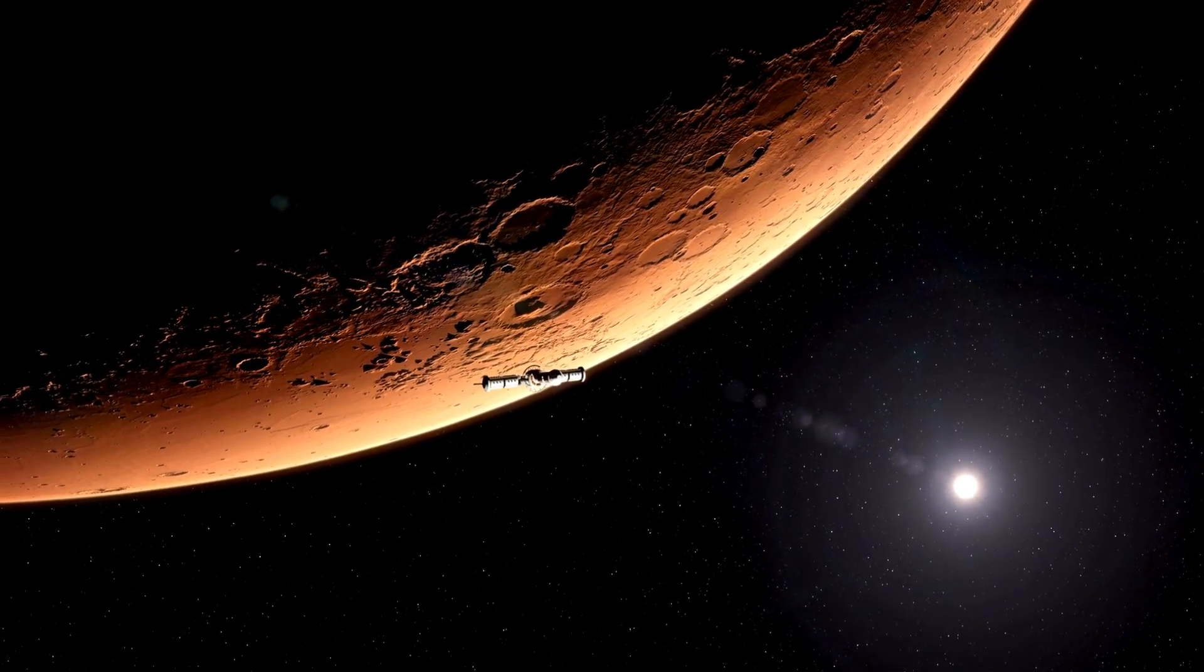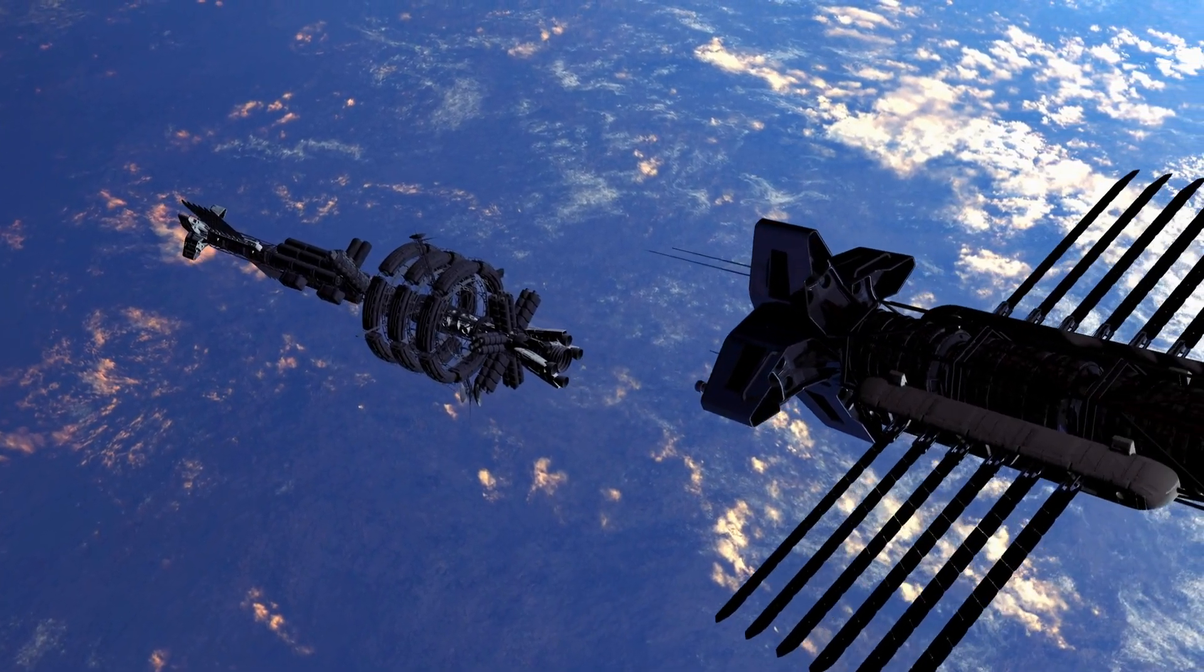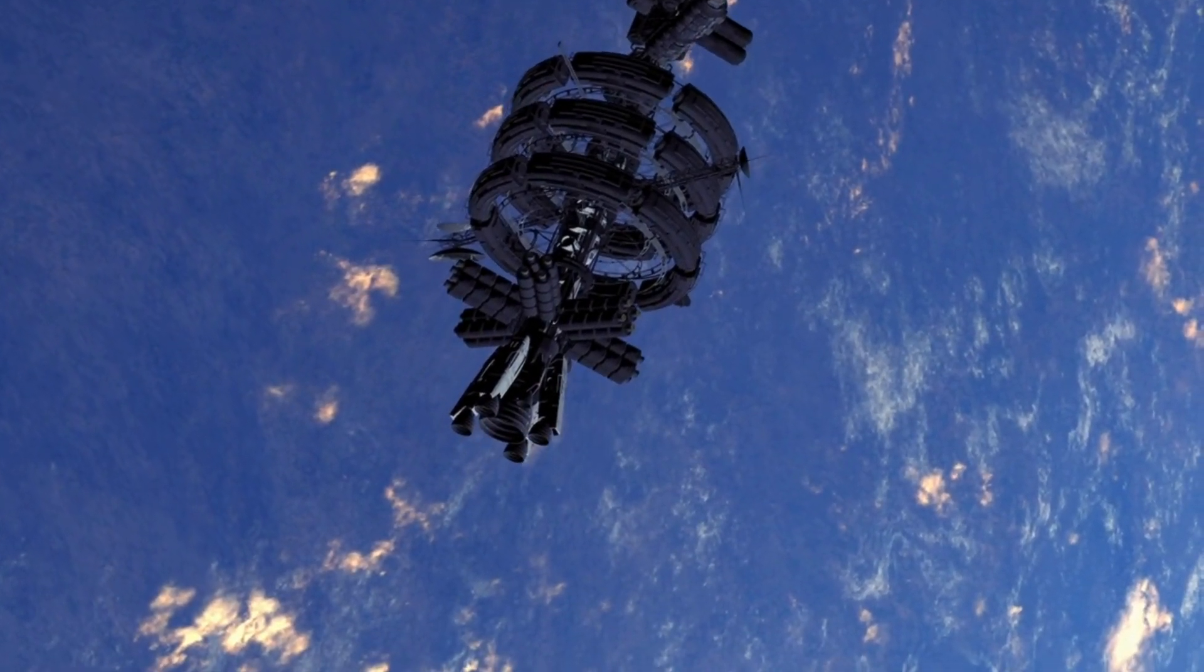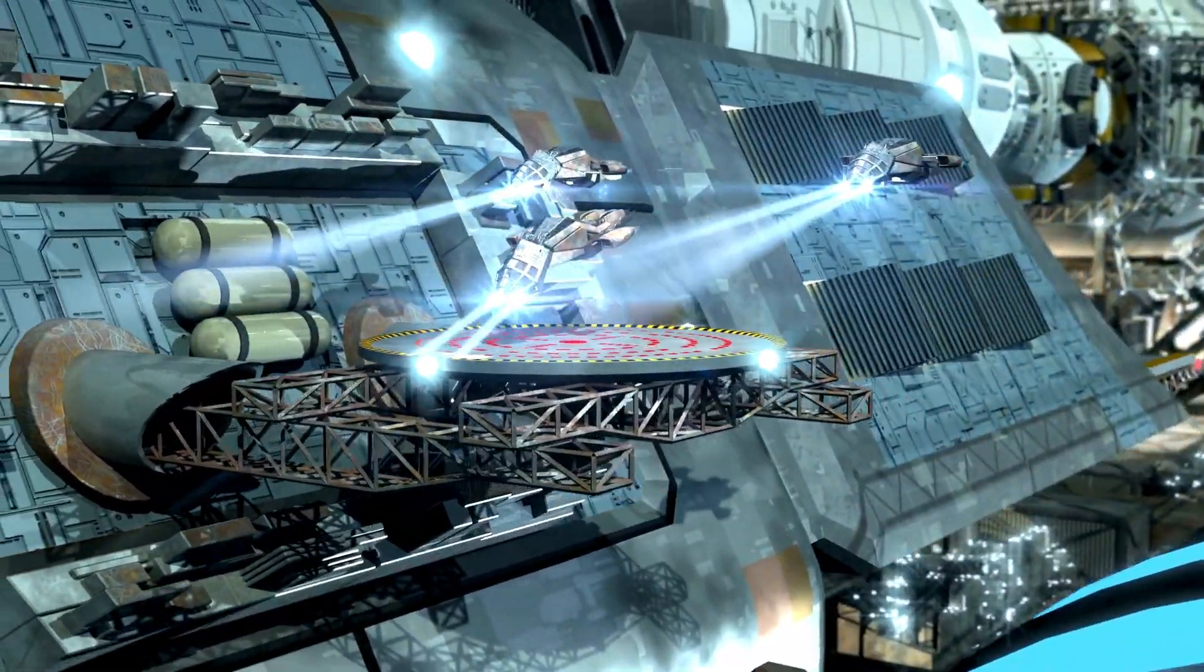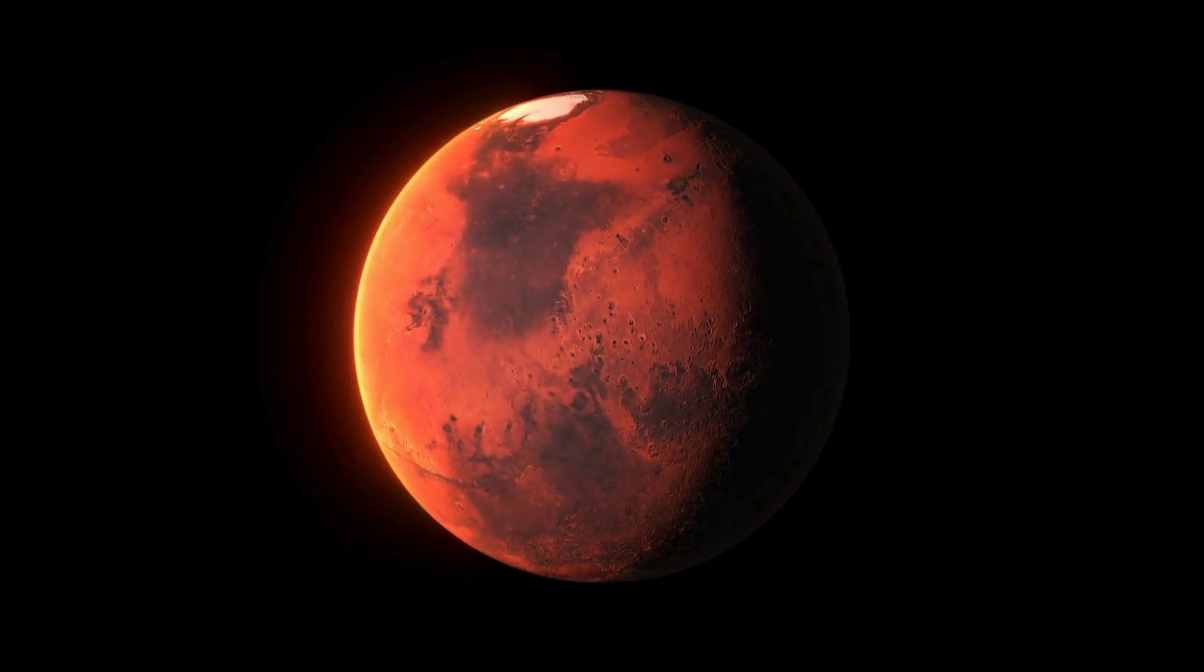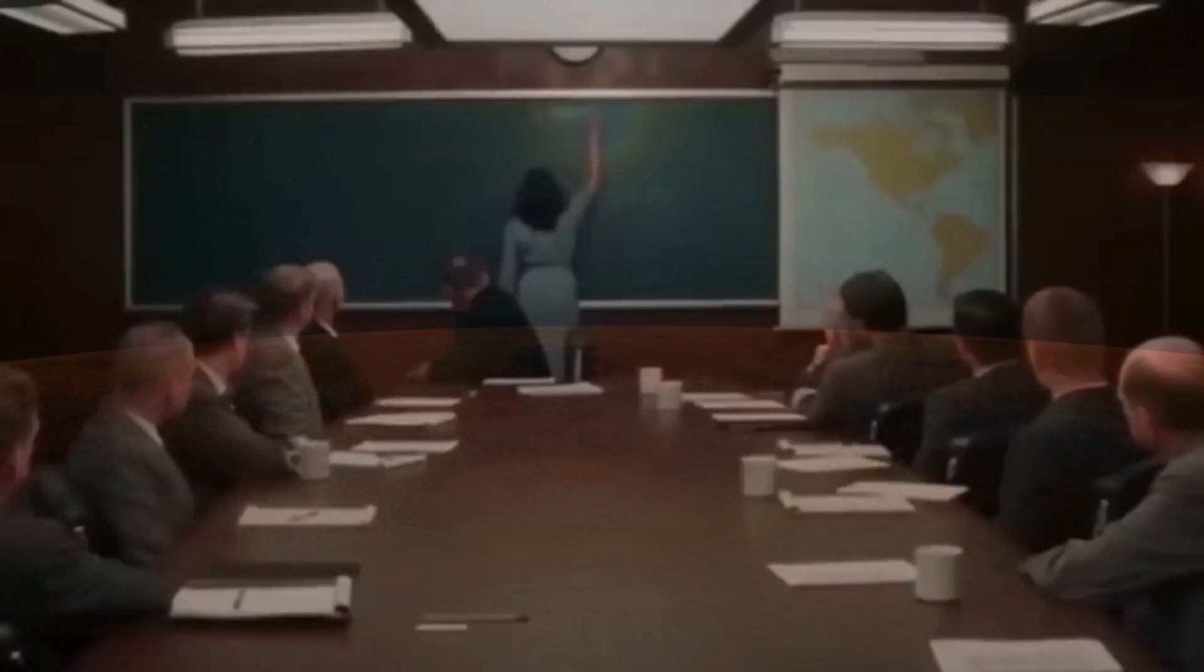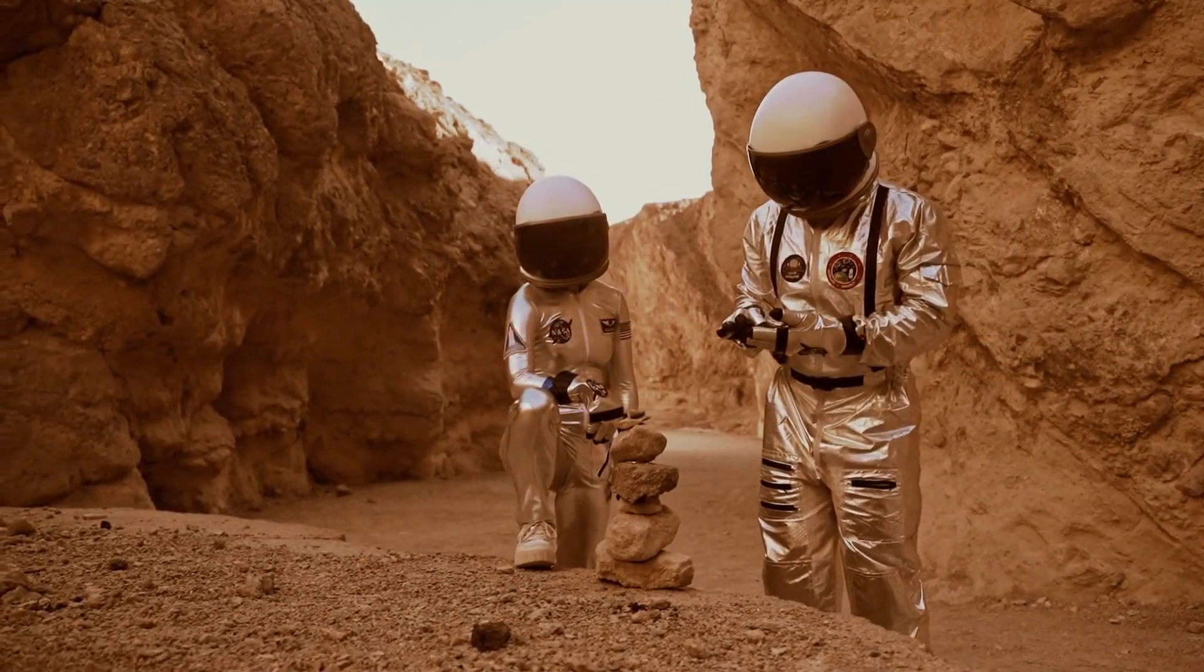Voyager One's environment was consistent for about five and a half years. The spacecraft then detected that the outward speed of the solar wind slowed to zero. The intensity of the magnetic field also began to increase at that time. Voyager data from two onboard instruments that measure charged particles showed the spacecraft first entered this magnetic highway region on July 28, 2012. The region ebbed away and flowed toward Voyager One several times. The spacecraft entered the region again August 25, and the environment has been stable since.